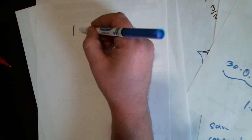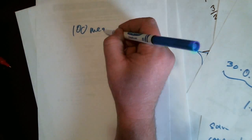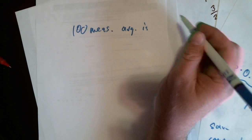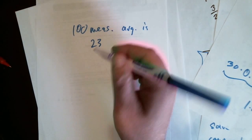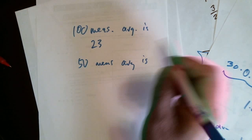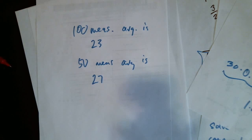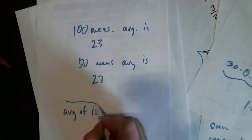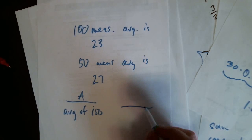So I was going to say, right away I'm looking at this and... A hundred measurements. The average is twenty-three. And then fifty measurements, the average is twenty-seven. And then we want to, you know, so we have the average of a hundred and fifty measurements versus twenty-five.